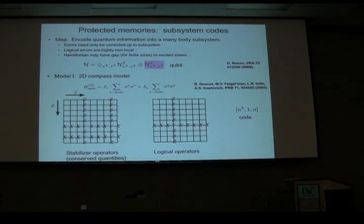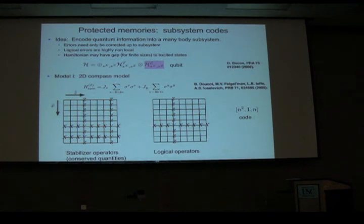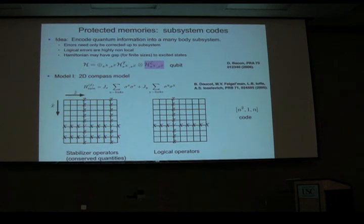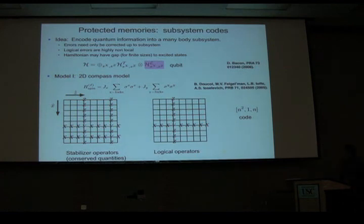Because pairs of Paulis commute with pairs of Paulis, those commute with the Hamiltonian and also with pairs of X string operators. They square to the identity, so we have plus or minus one eigenvalues. These pairs generate the stabilizer group. But we also have logical operators which commute with the Hamiltonian and stabilizers but anti-commute with each other. Single strings collide at one point, so they anti-commute. These operations correspond to logical operations on your qubit. This turns out to be an N-squared, one, N code — one logical qubit in N-squared physical qubits.